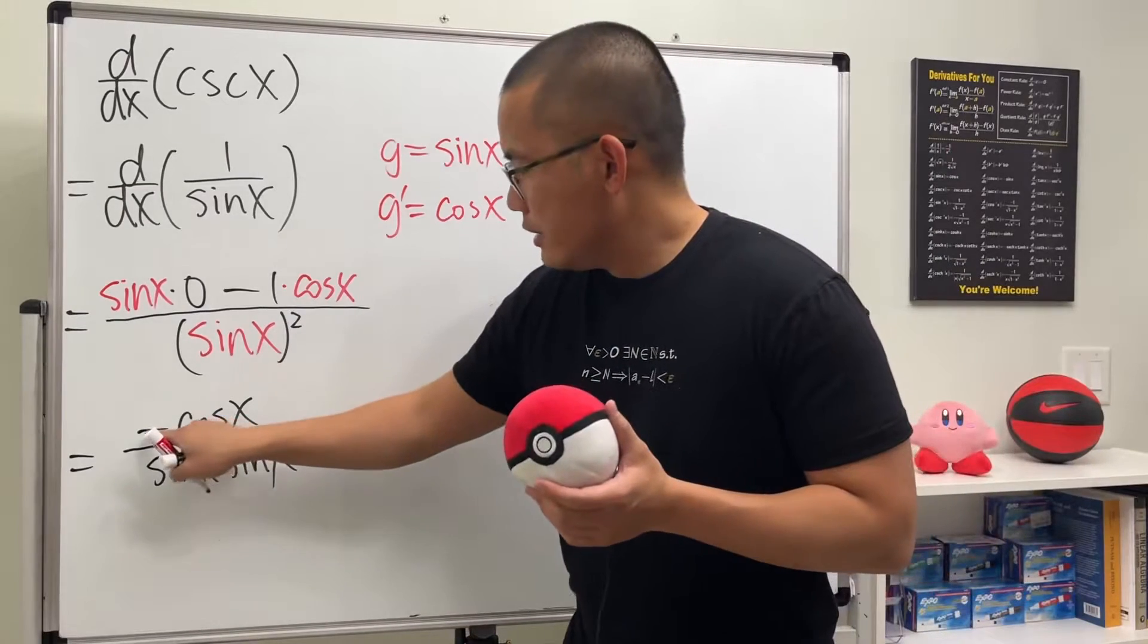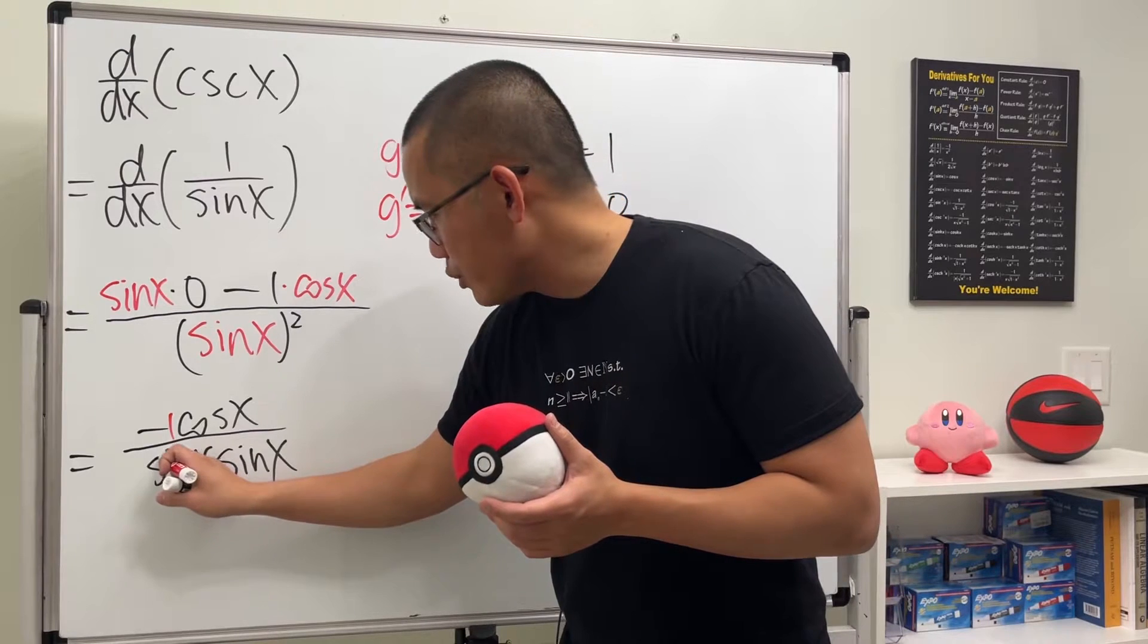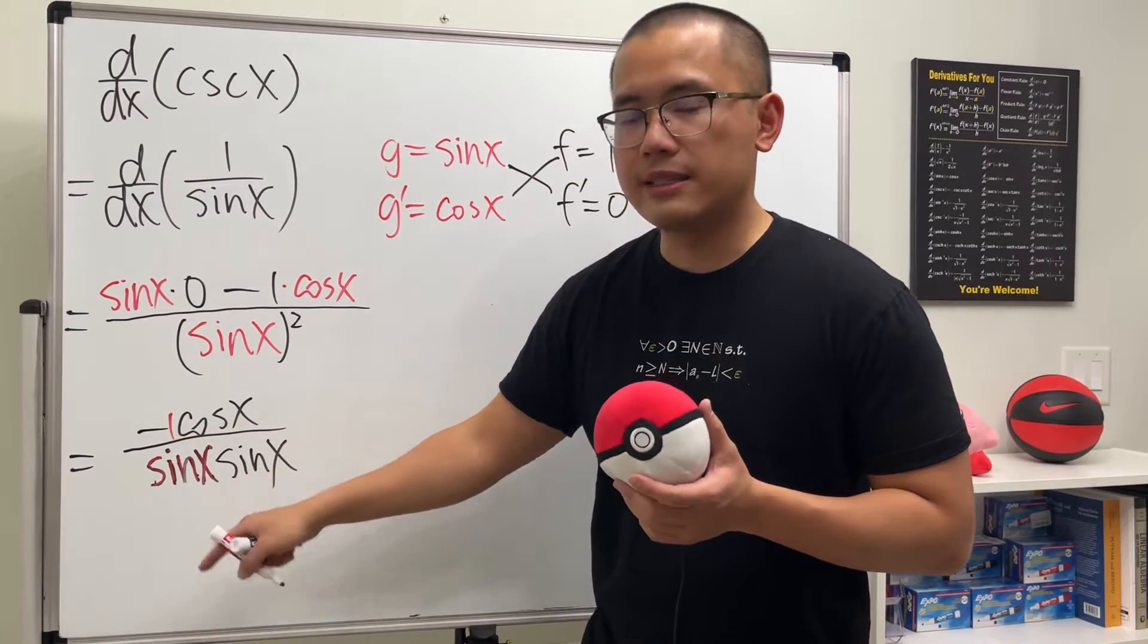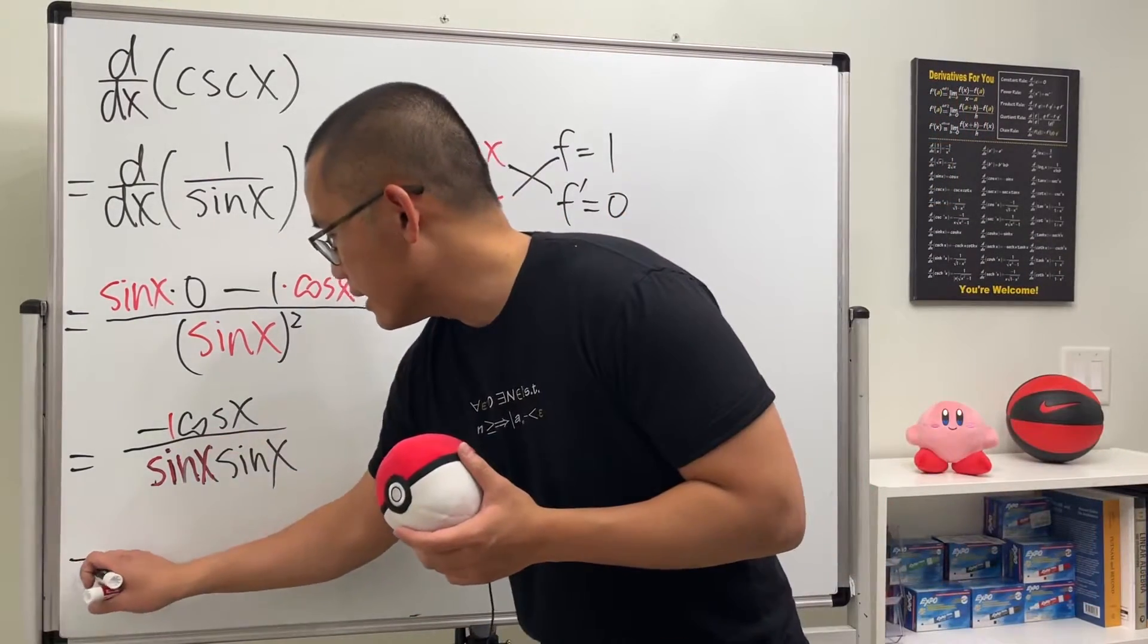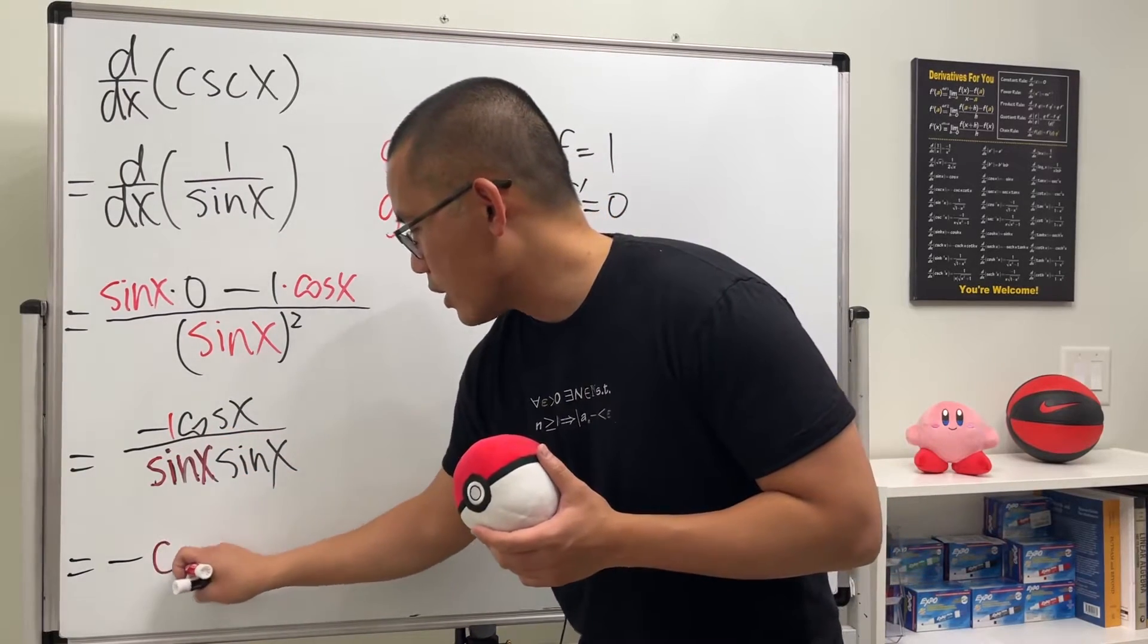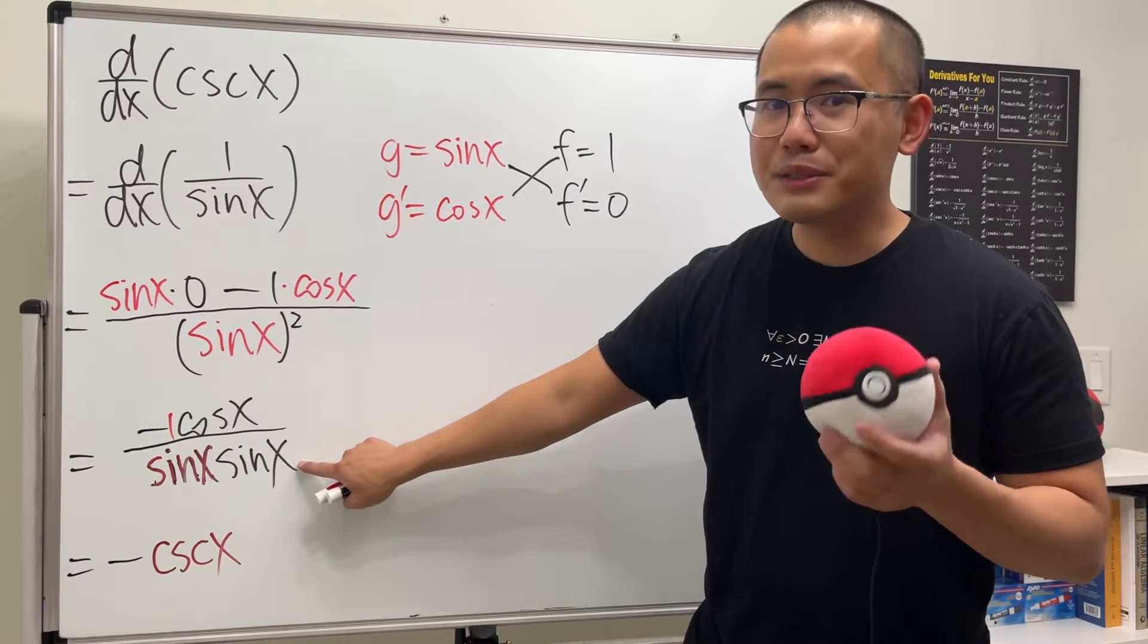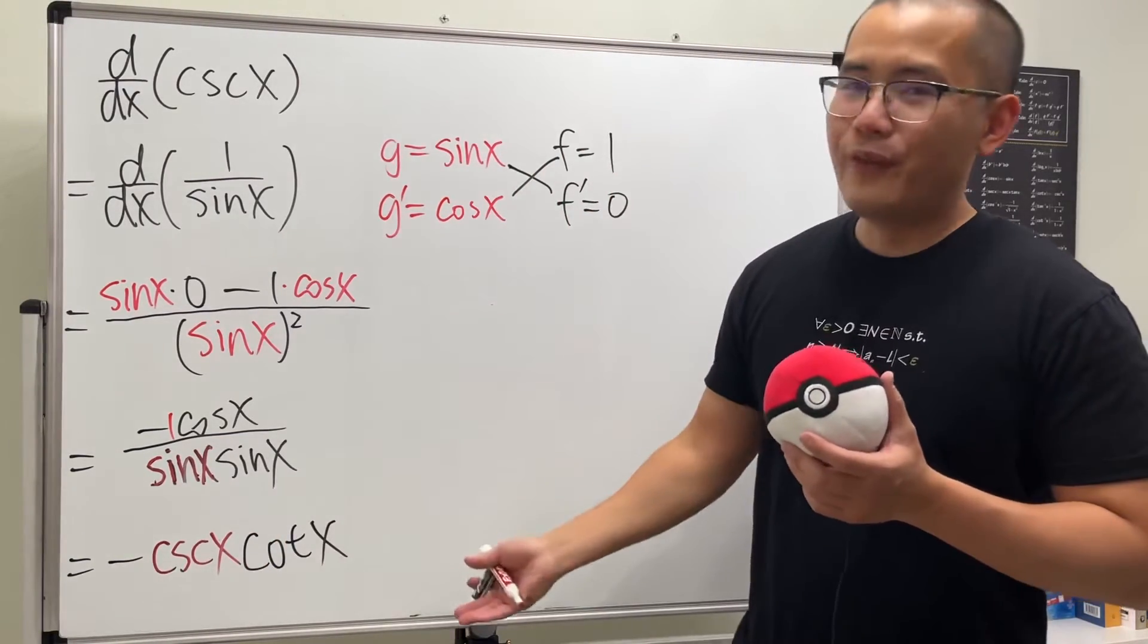The reason I want to do this is because this right here is like negative 1, and then right here I'm going to pair that 1 with this sine x, because 1 over sine x can be rewritten as cosecant. So let's go ahead and write that. We have negative all the way in the front, and 1 over sine x is cosecant x. And then when we have cosine x over sine x, that's the same as cot x. So cot x. Therefore, the derivative of cosecant x is negative cosecant x times cot x.